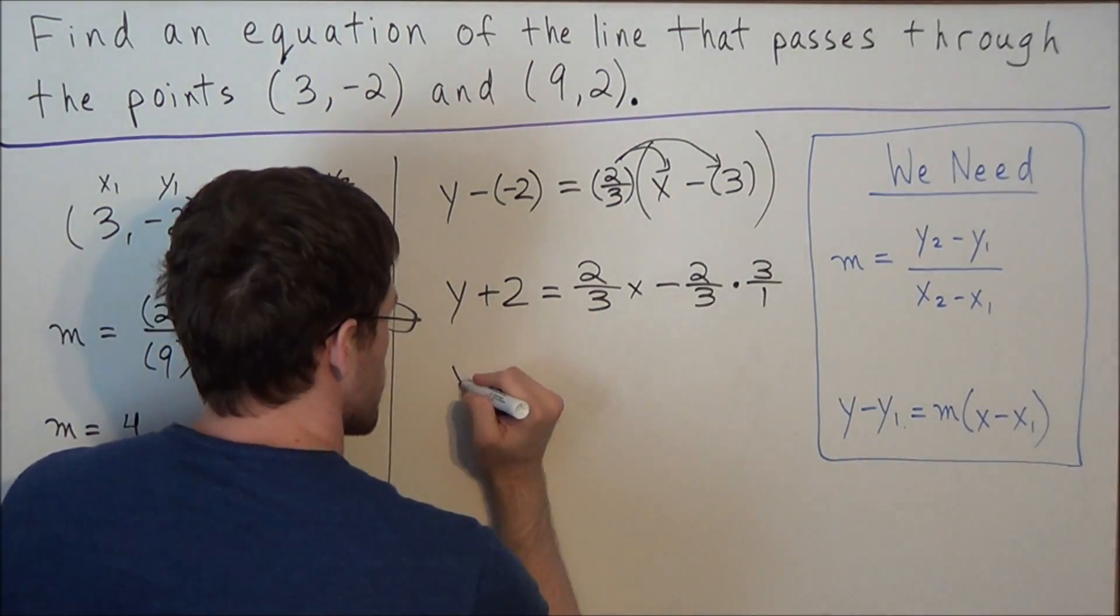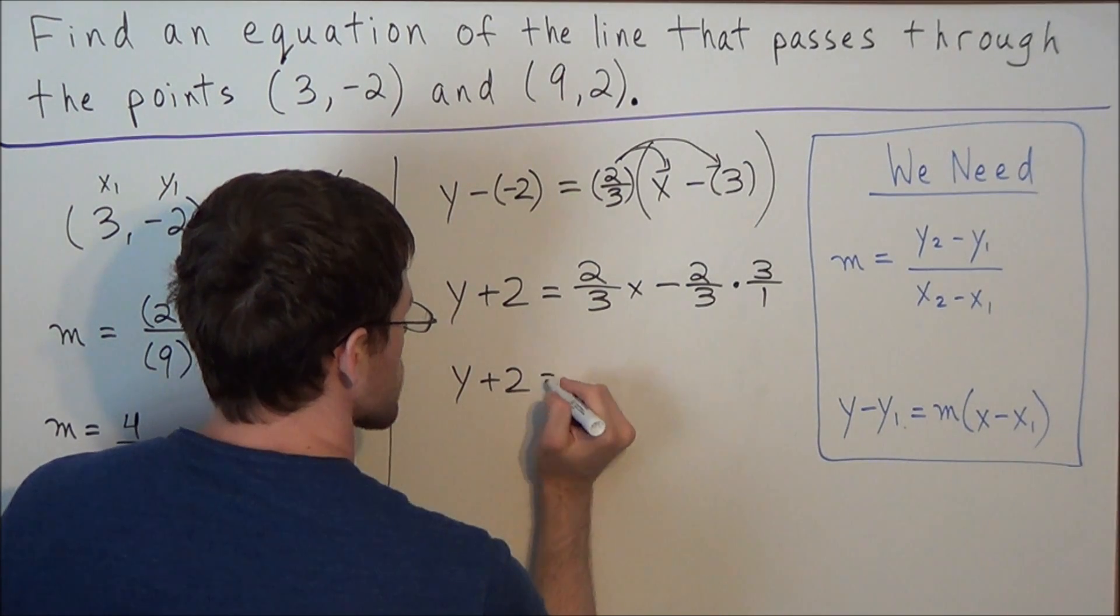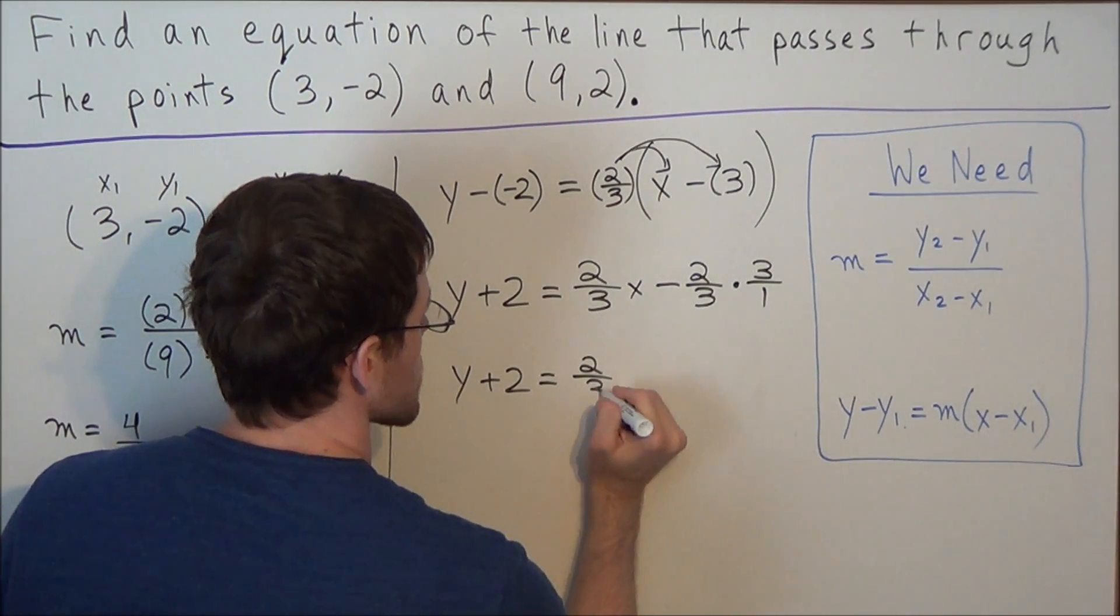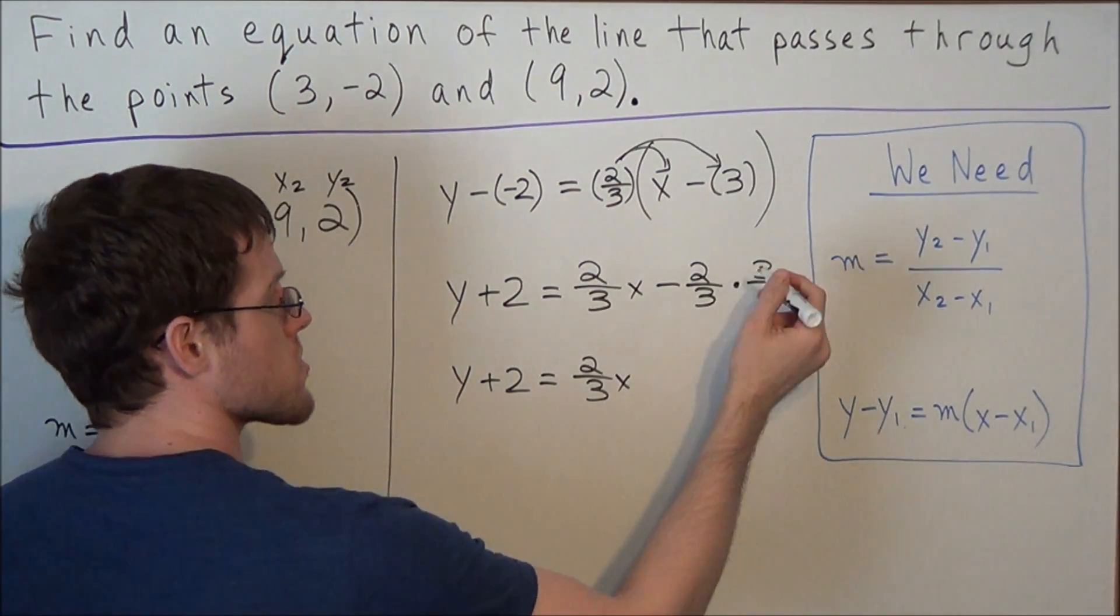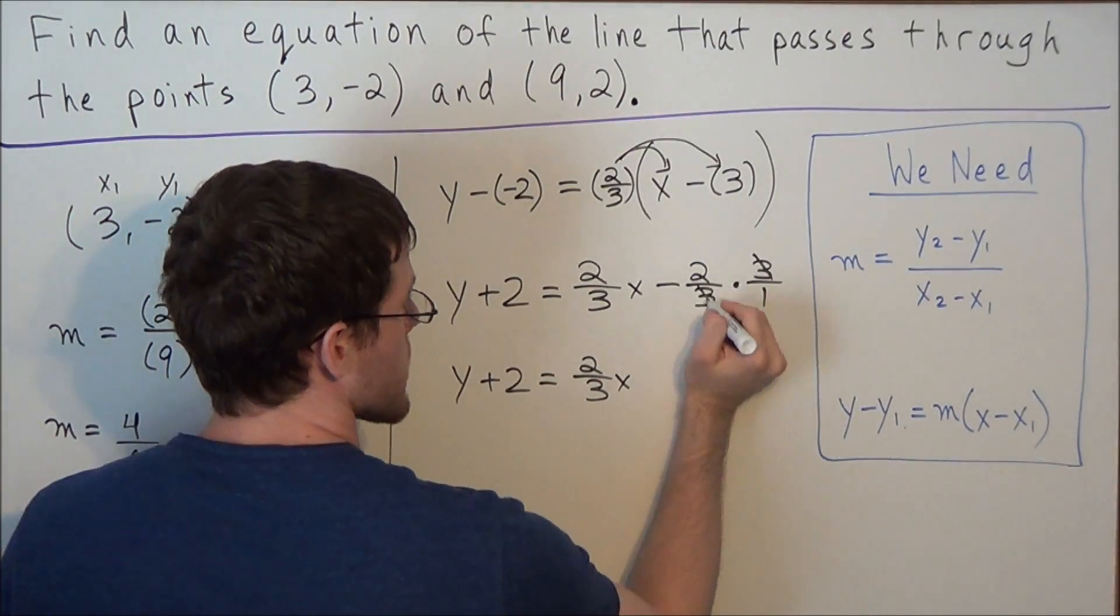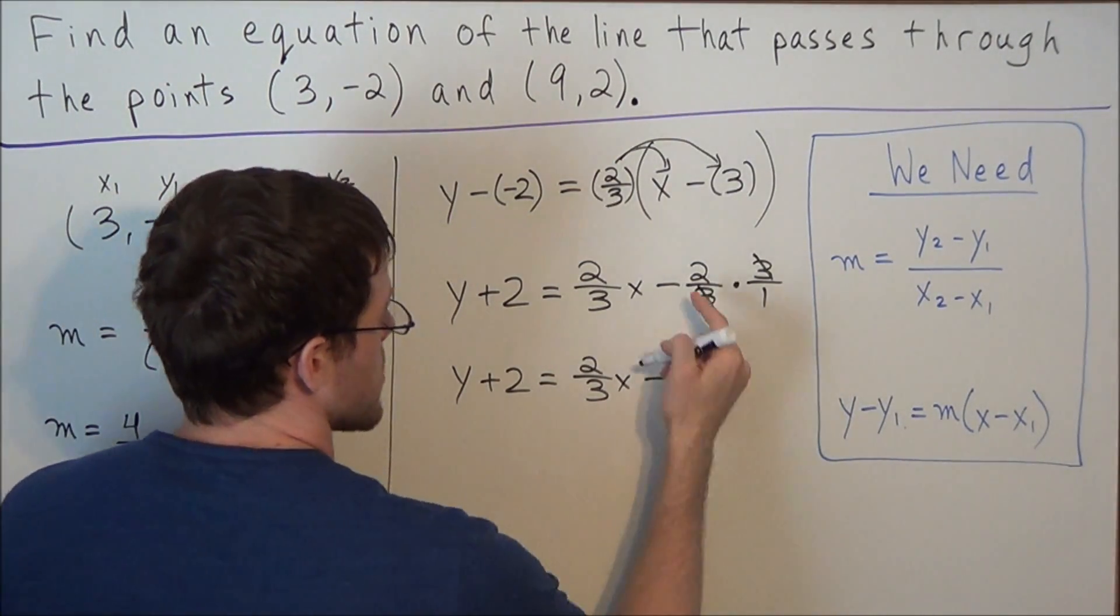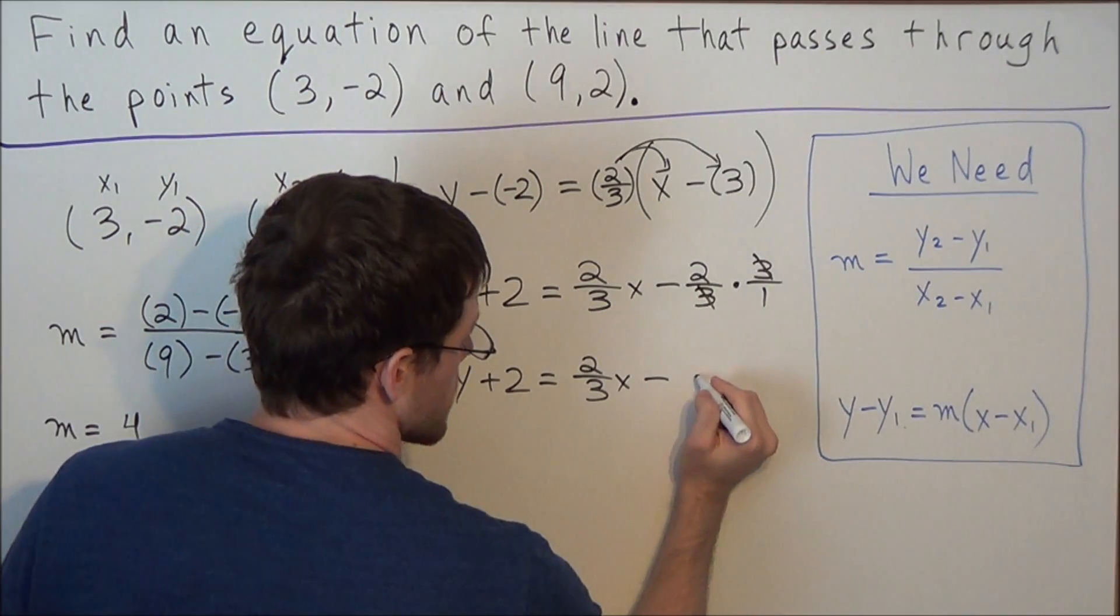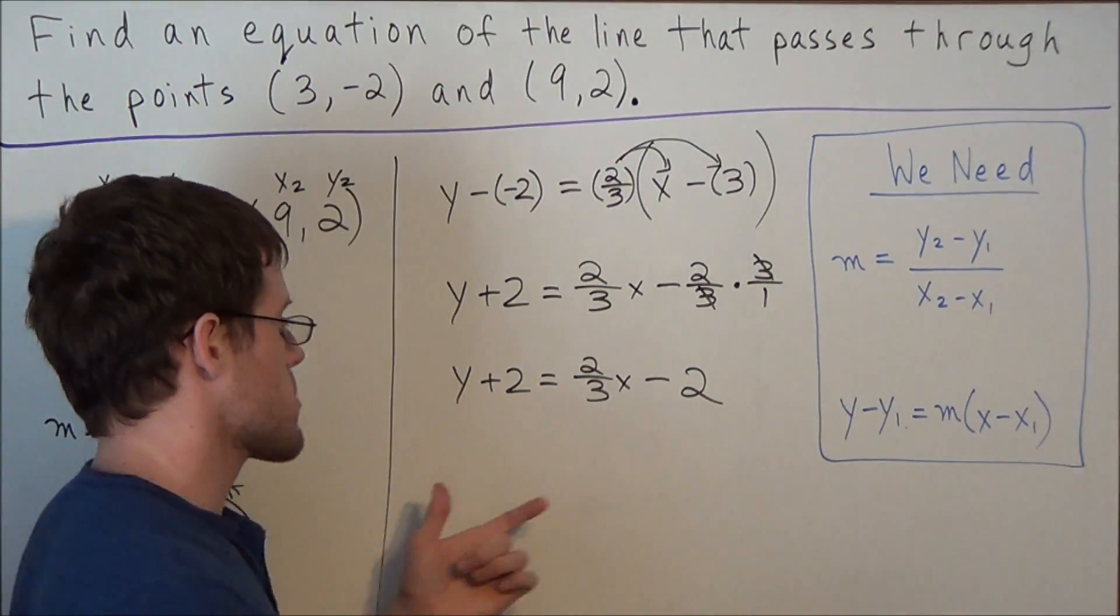So for the next line we have y plus 2 equals 2 thirds x, and now notice the common factors of 3 we could cancel out. So we have minus and 2 divided by 1 is 2, so this is our next line.